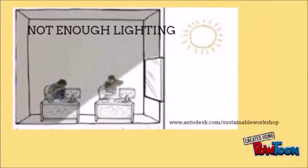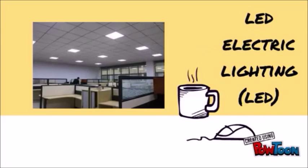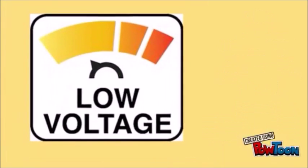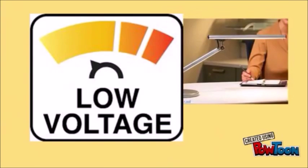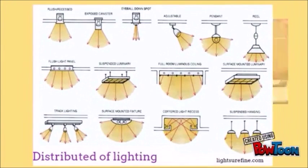Whatever brightness you can't achieve passively with sunlight, you'll make up with electric lights. Obviously you want energy efficient ones. You measure lighting efficacy by how many lumens of light it delivers per watt of electricity. This includes both the bulbs that generate the light and the fixtures that distribute it.